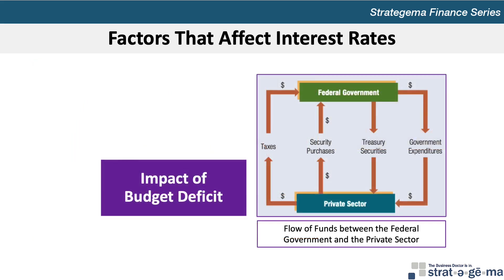When Federal Governments enact fiscal policies that result in more expenditures made than tax revenue collected, the budget deficit is increased. Because of large budget deficits in recent years, the U.S. government has been a major participant in the demand for loanable funds. A higher Federal Government deficit increases the quantity of loanable funds demanded at any prevailing interest rate, which represents an outward shift in the demand curve.